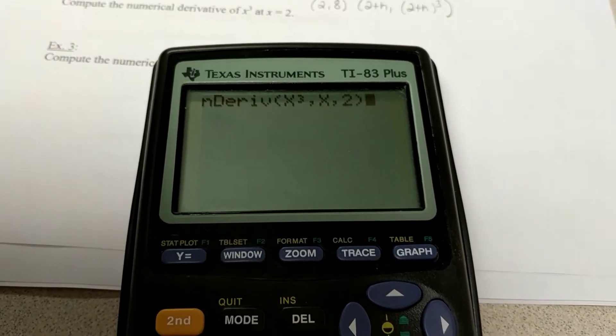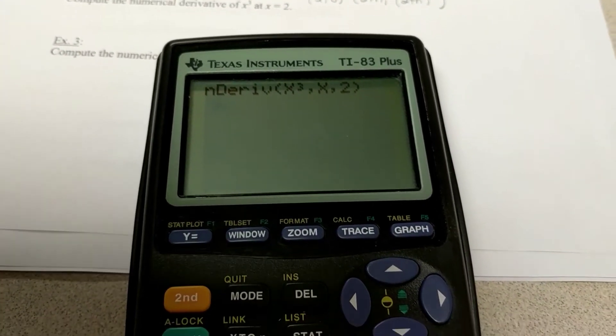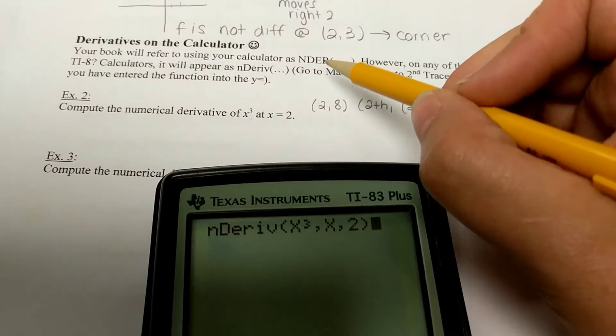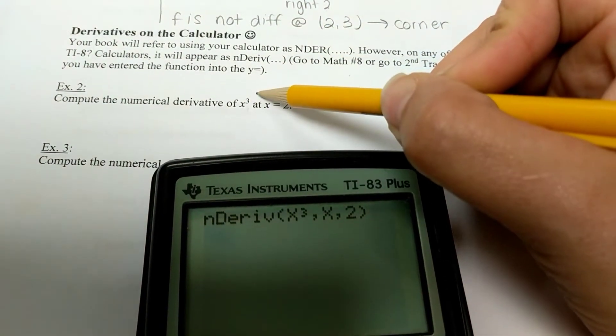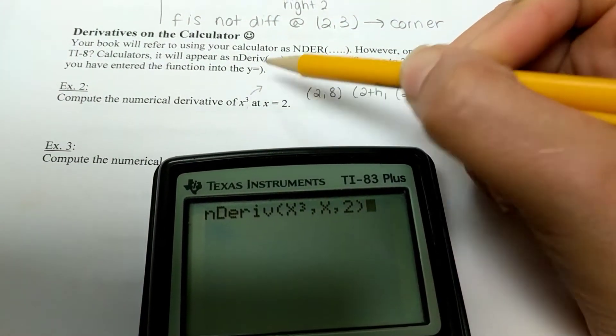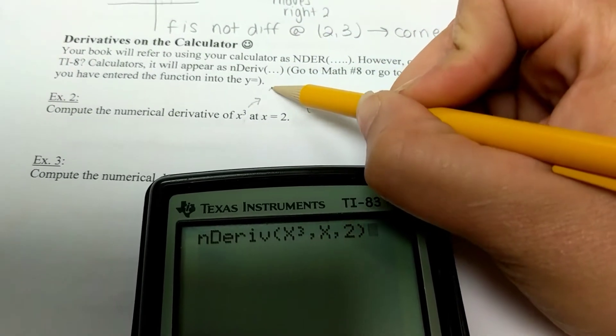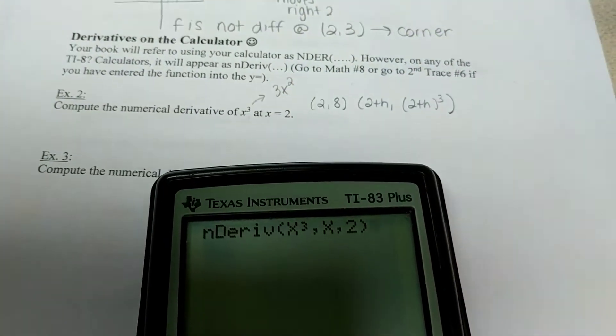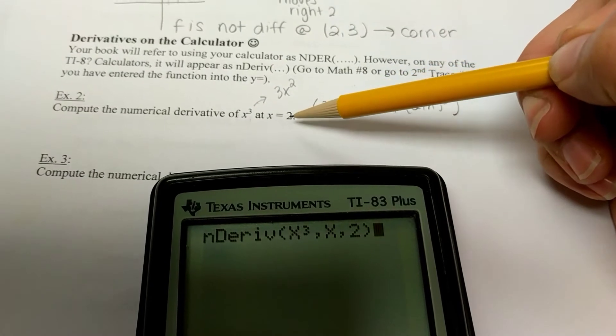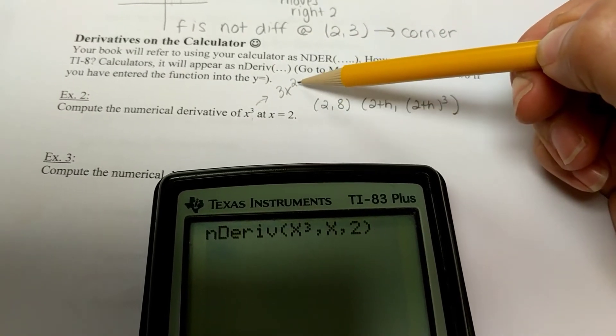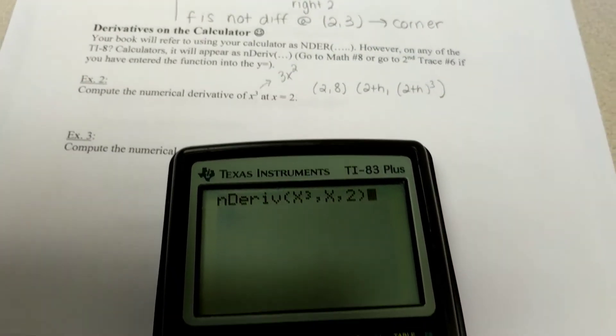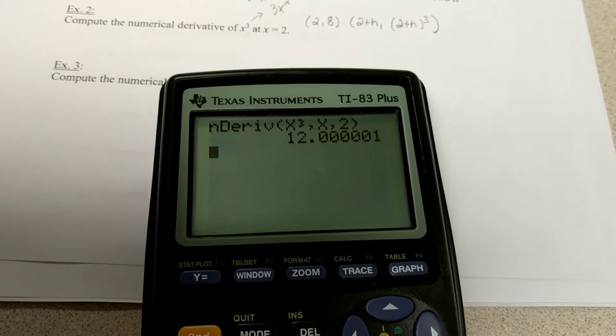I'm going to close my parenthesis. Now, if you remember, from section 3-1, the slope of x cubed, we figured out, was the function 3x squared. So, I should be able to figure this out, that if I plug in the 2, 2 squared is 4 times 3 is 12. If I hit enter, there it is.